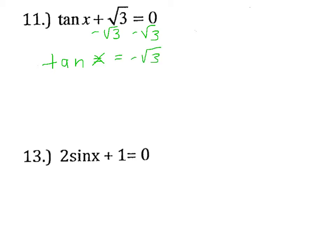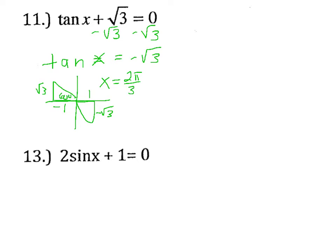These are basically just like the problems we were working on back on the last page. We want to find the angles that give us a tangent of negative root 3. We know that tangent is negative in the second and fourth quadrants. The opposite side is negative root 3 or root 3, and our adjacent side is negative 1 or 1. So we're dealing with the 60 degree angles, so our two answers for x are 2 pi over 3 and 5 pi over 3.